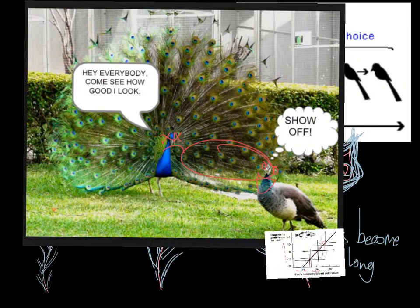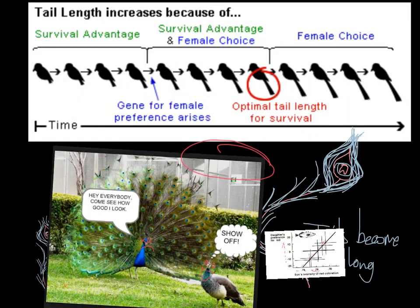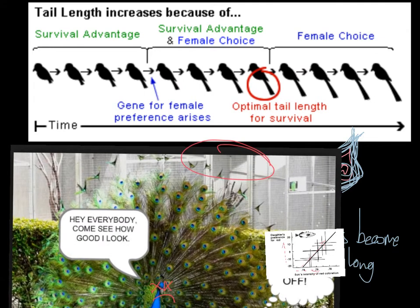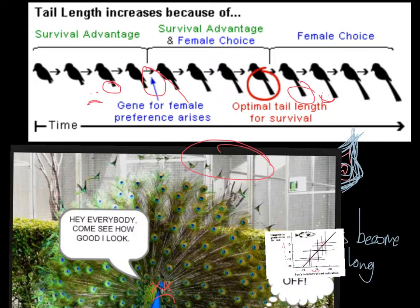Imagine a bird population in which females choose mates at random. Males with slightly longer tails fly a little more adeptly, avoid predation, and so survive better than males with slightly shorter tails. In this situation, a gene for females choosing longer tails — that is, sexier males — will be favored, since by choosing a long-tailed male, she will have sons with longer tails. This trait will spread through the population until most males have long tails and most females prefer long-tailed mates.